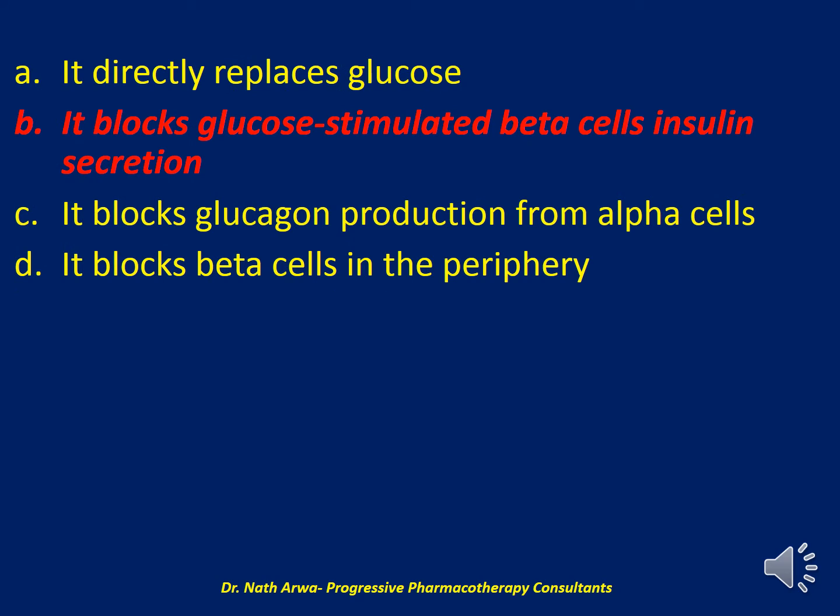Octreotide actually blocks glucose-stimulated beta cell insulin secretion from the beta cells in the pancreas specifically, which is being turned on by excessive concentrations of the sulfonylurea — glyburide — present due to reduced elimination. Glyburide, marketed as Glynase, is a sulfonylurea that is 50% cleared or eliminated by the kidneys. Patients with acute impairment of renal function can develop sulfonylurea toxicity, so be very careful when managing patients with AKI or kidney issues.